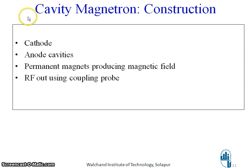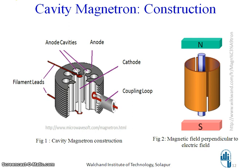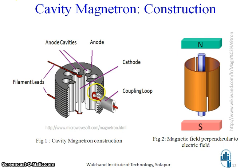Let us see the construction of cavity magnetron. The cavity magnetron includes a cathode, anode cavities, permanent magnets producing magnetic field, and RF output using a coupling loop. In the construction diagram, there is a cathode at the center, surrounded by the anode. These are the anode cavities, and the anode-to-cathode voltage is applied using filament leads. Output can be taken from one of the anode cavities using the coupling loop as shown.